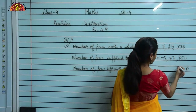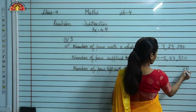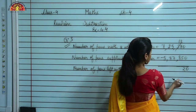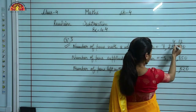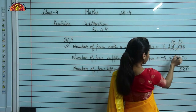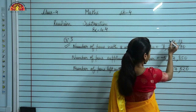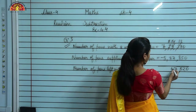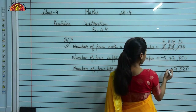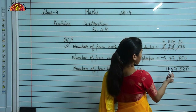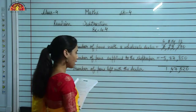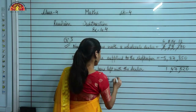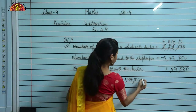0 minus 0 is 0. 7 minus 5 is 2. 3 minus 8 is not possible, so it takes borrow, giving 13. 13 minus 8 is 5. 4 is left; 4 minus 7 is not possible, so it takes borrow, giving 14. 14 minus 7 is 7. 1 is left; 1 minus 7 is not possible, so it takes borrow, giving 11. 11 minus 7 is 4. 6 minus 5 is 1. Number of pens left with the dealer is 1,47,520. Therefore, he is left with 1,47,520 pens.